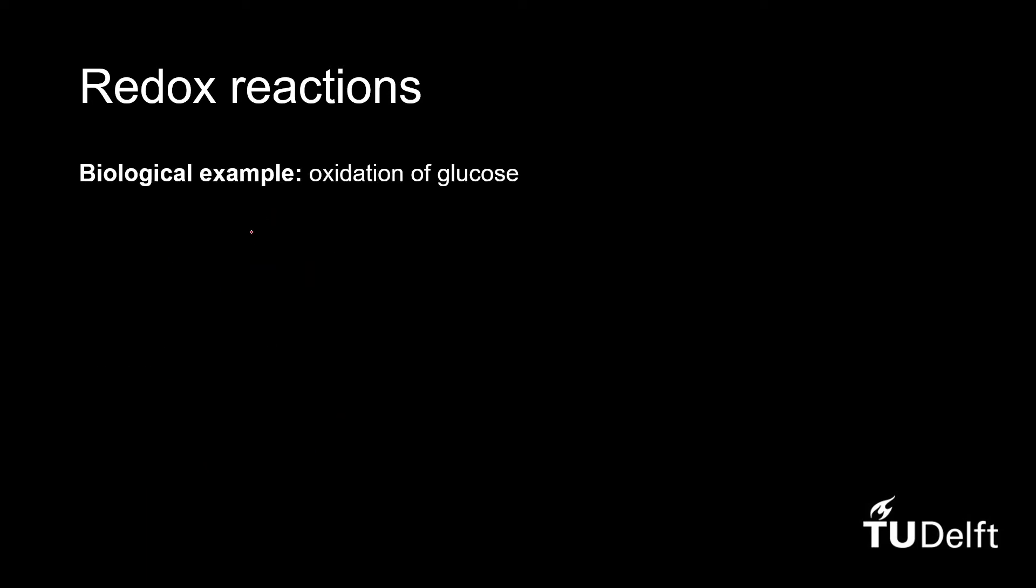Now let's look at a biological example of a redox reaction. We are going to have a look at the oxidation of glucose, which is an essential process to generate energy for microbial organisms. You will learn more about this throughout this course. The oxidation of glucose first involves the oxidation of a glucose molecule.